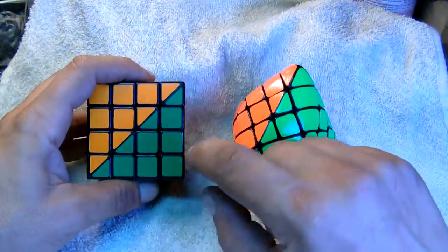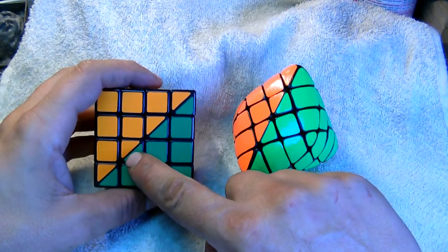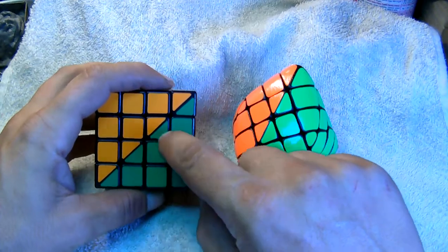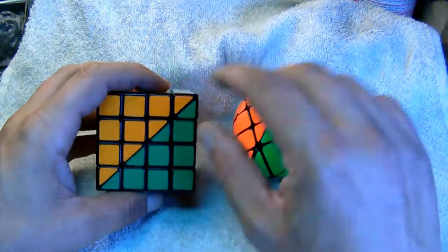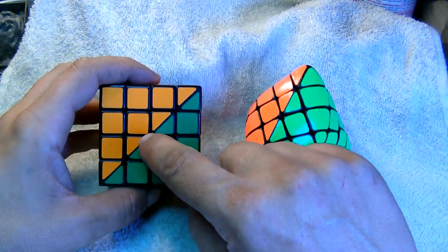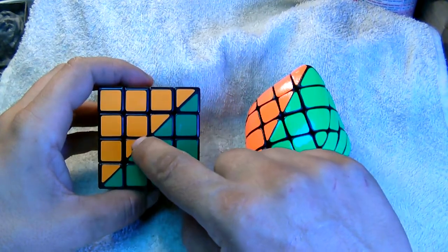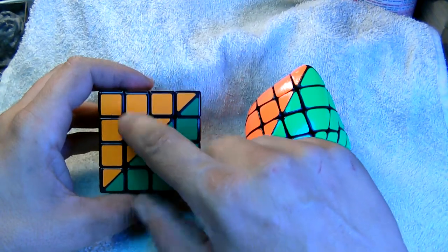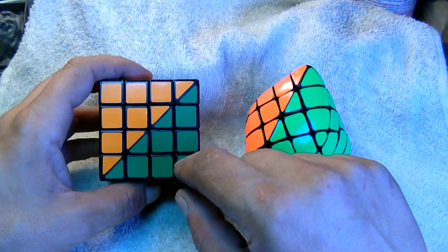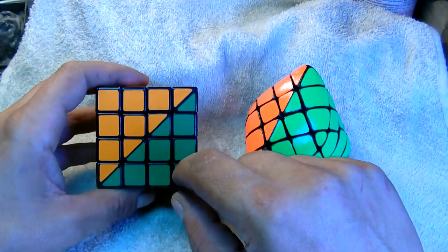Because of the stickering, as you can see the way the stickers go, the center pieces here have orientation. Meaning that the orange side of the pieces has to be rotated on the upper side of the puzzle and the green to the bottom.